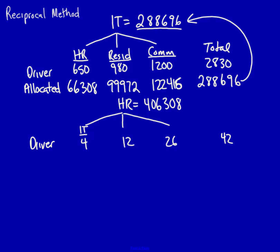I'm going to take the 4, divide it by the 42, multiply it times the 406,308 and that's going to give me my allocated. In this case 38,696.